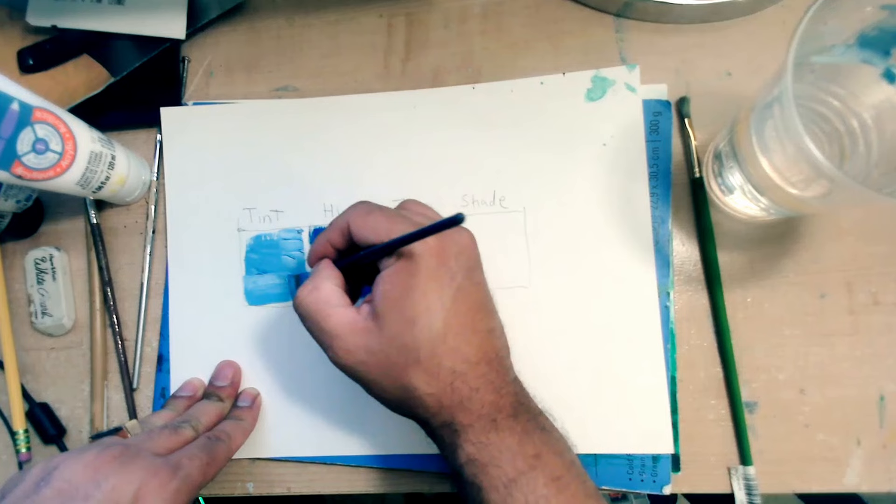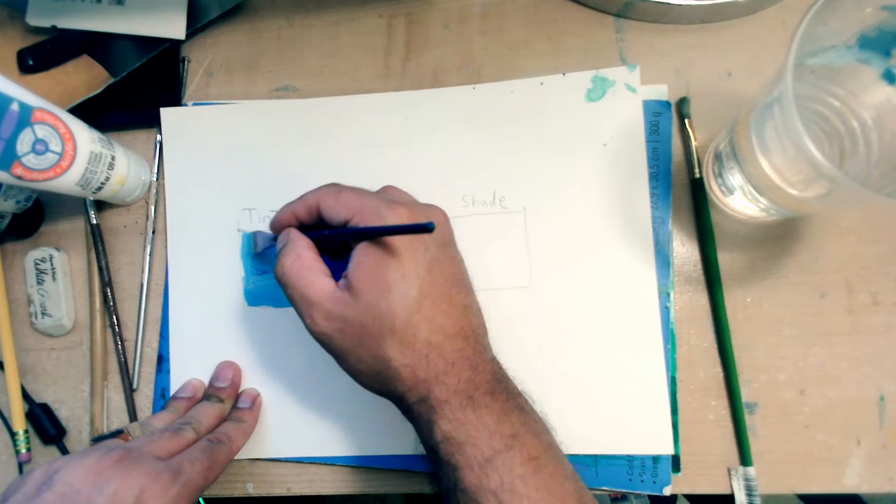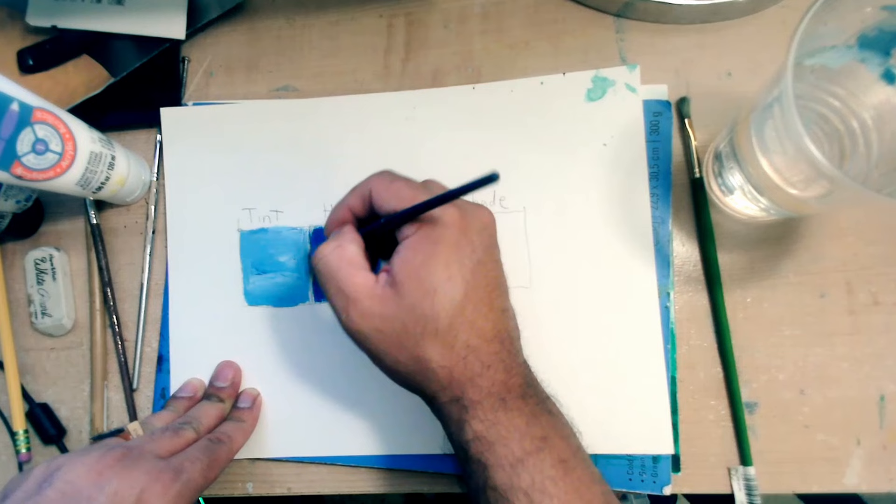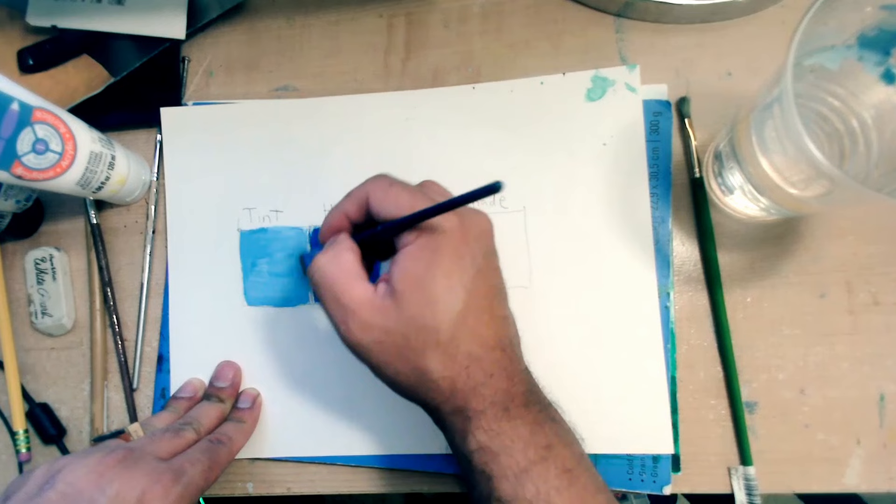So when I say add highlights, add tints, I'm referring to blend it with white. So it looks brighter. It looks like a sky blue. There it is. Pretty cool, huh?